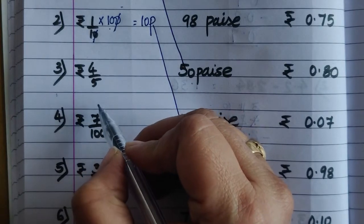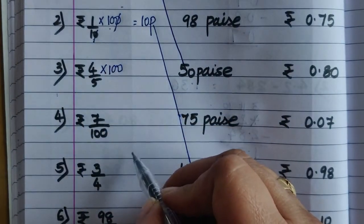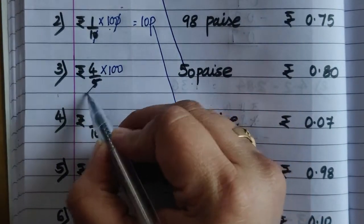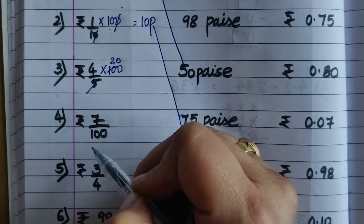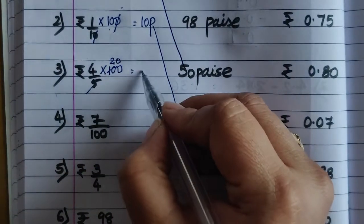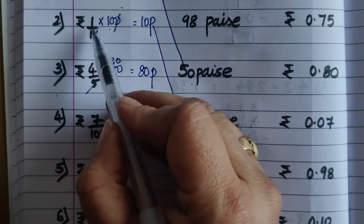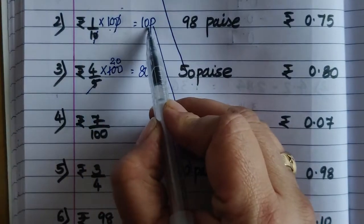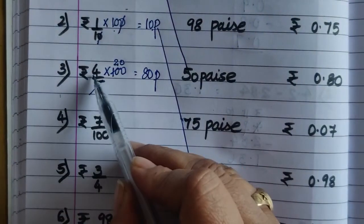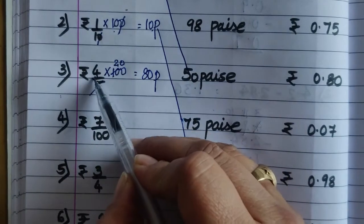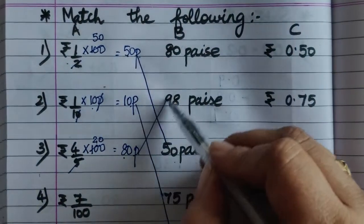Next is 4 upon 5 — again हम multiply करेंगे 100 से. 5 के table में 100 कब आता है: 5 टूजा 10, और यहाँ एक 0, so 20. 4 multiply by 20: 2 चारजा 8, so 4 multiply by 20 is 80. So, इसका answer है 80 पैसे. देखो यहाँ पर 1 था तो 1 multiply by 10 is 10, 1 multiply by 50 is 50, लेकिन यहाँ digit है 4, so 20 multiply by 4 is 80. So, हम इसे 80 पैसे से match करेंगे.